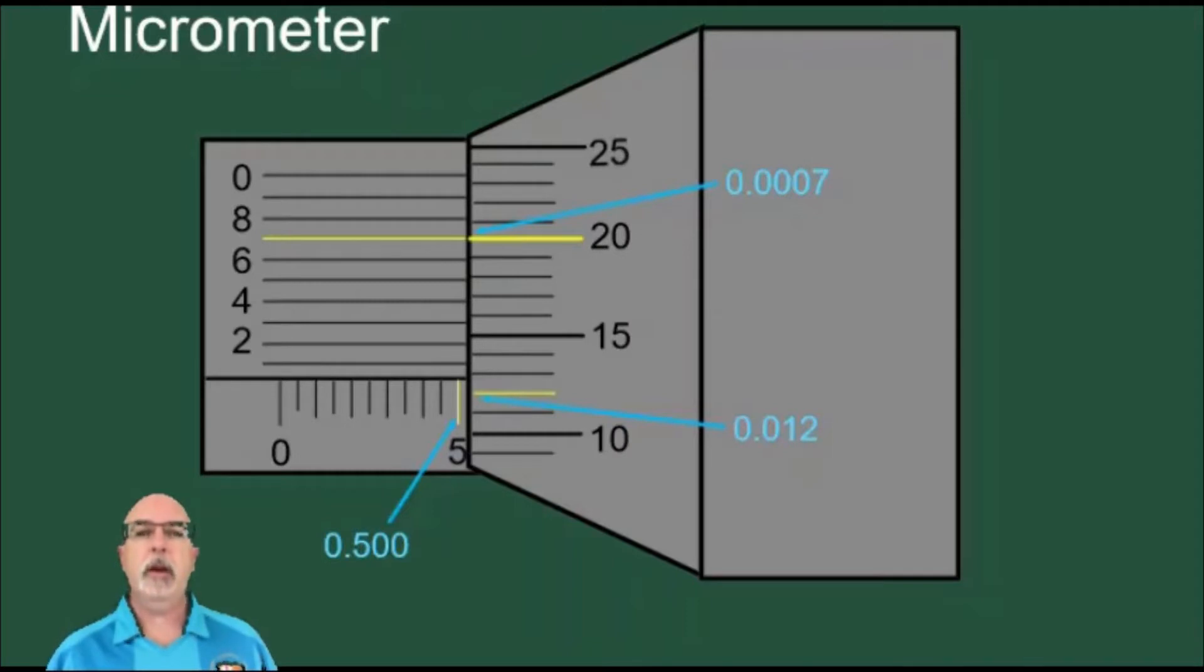This video shows an example of how to read a micrometer. In this case, a micrometer that is designed to measure things that are between 0 and 1 inches.